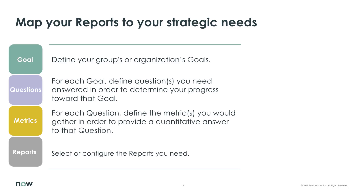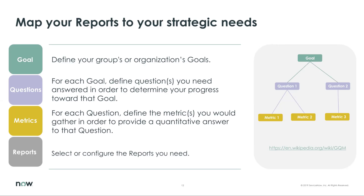What you want to do is define your group's or organization's goals. Say you're the security operations team manager and you want to reduce the amount of time that your team is spending on security incidents of low priority — that might be one of your organization or group's goals. In order to know that you're accomplishing your goals, you need to ask certain questions. For each goal, you're going to define at least one question you need to be able to answer in order to determine your progress towards your goal. And then for every question, there's going to be some form of a metric — an answer, a way to answer that question with numbers, with a chart, with quantitative or qualitative data — that will help you understand whether you're meeting those goals. You can have more than one question per goal, and you can have more than one metric per question. Once you've gone through this exercise, those metrics are going to direct you to the reports you need to create in order to know whether you're accomplishing your organization's goals.